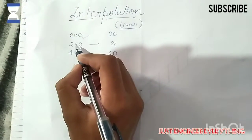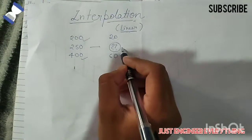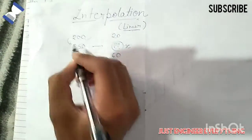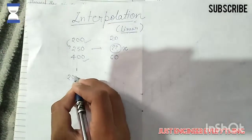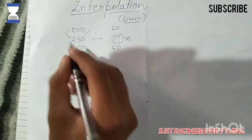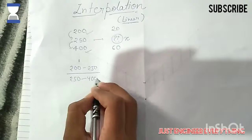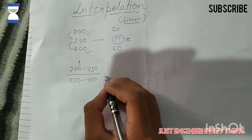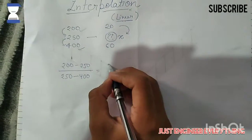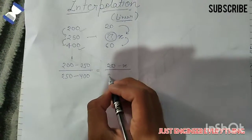You use the corresponding enthalpy values, then set up the interpolation equation. The first value is 200, so we write: (200 minus 250) divided by (250 minus 400) equals (20 minus x) divided by (x minus 60).